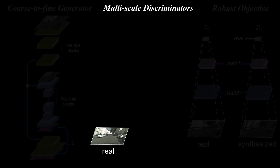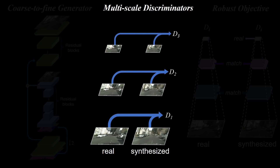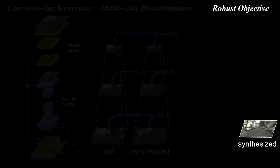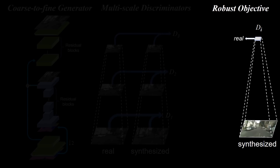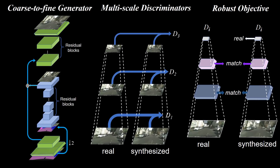For discriminators, we build an image pyramid for both real and synthesized images and have three different discriminators at different scales. Finally, we present a robust GAN loss. In addition to the standard discriminator loss, we also match the intermediate feature layers between the real and synthesized images. These three modifications allow us to generate photorealistic, high-resolution images.